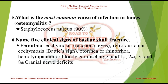Name 5 clinical signs of basilar skull fracture: periorbital ecchymosis (raccoon's eyes), retroauricular ecchymosis (Battle's sign), otorrhea or rhinorrhea, hemotympanum or bloody ear discharge, and 1st, 2nd, 7th, and 8th cranial nerve deficits.